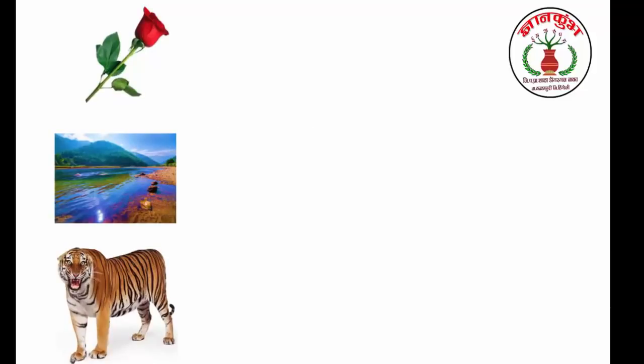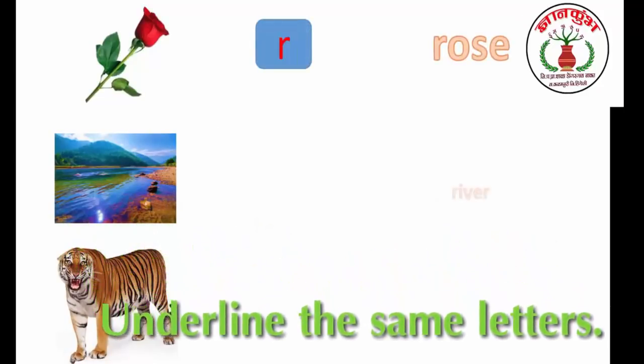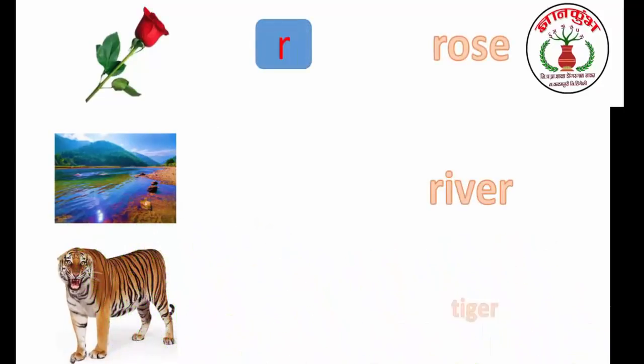Look at the pictures. Repeat the words. Underline the same letters. Mouse. R, R.